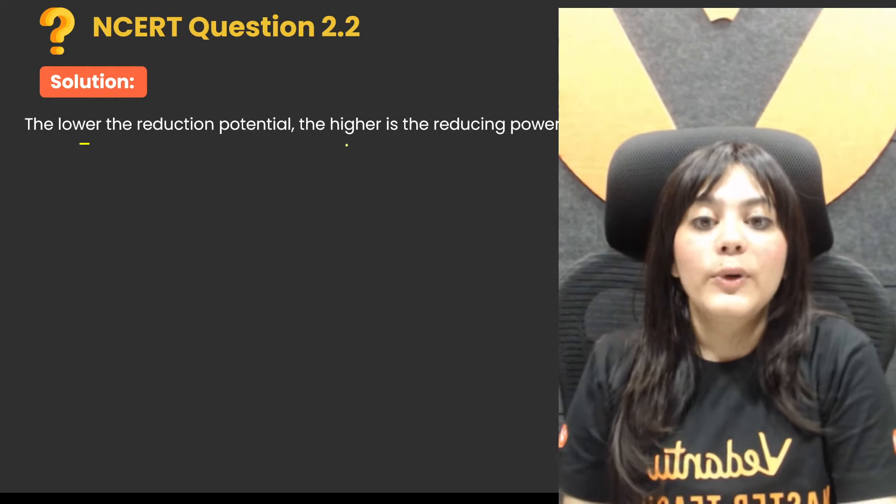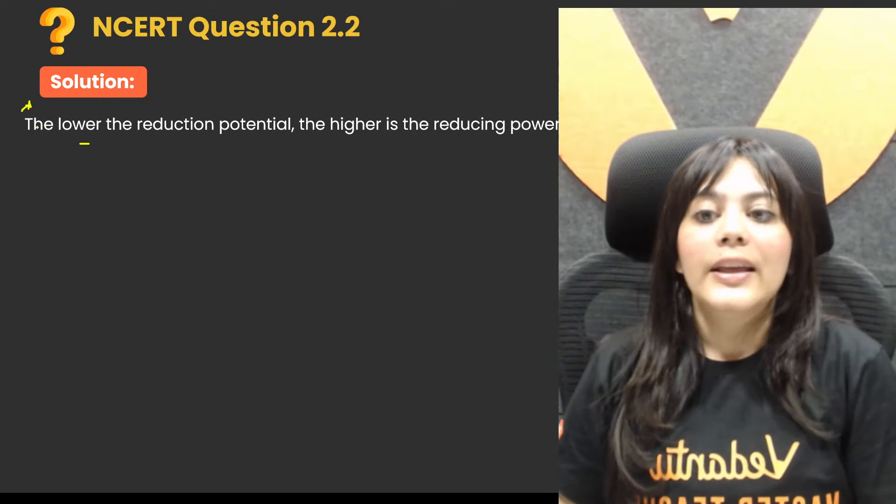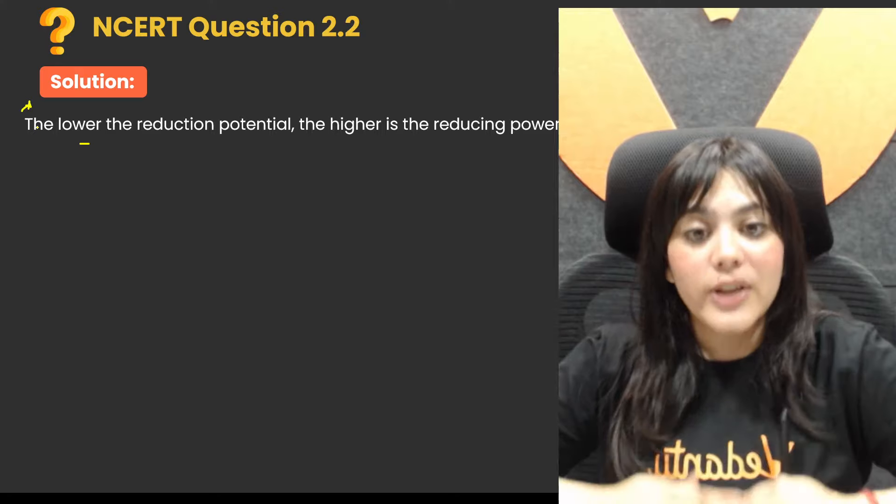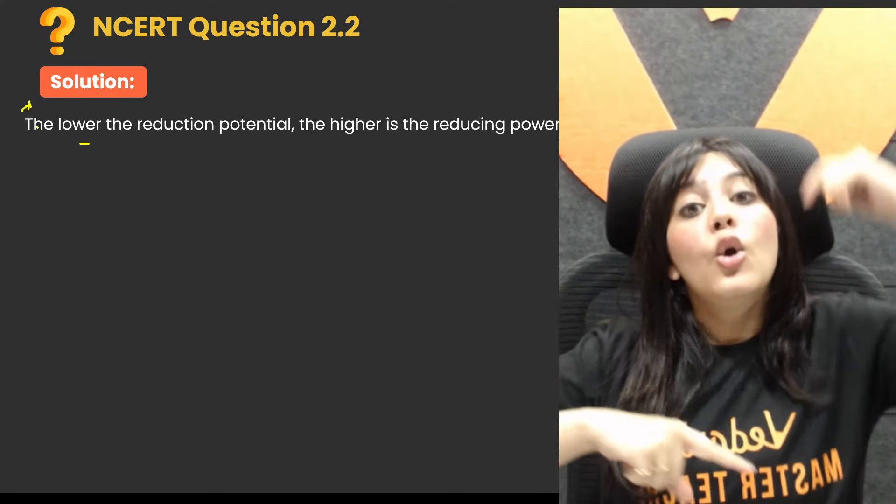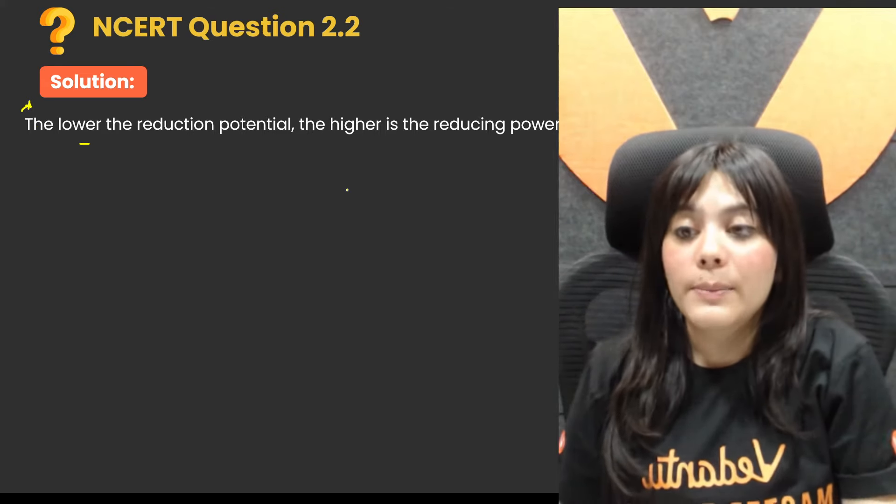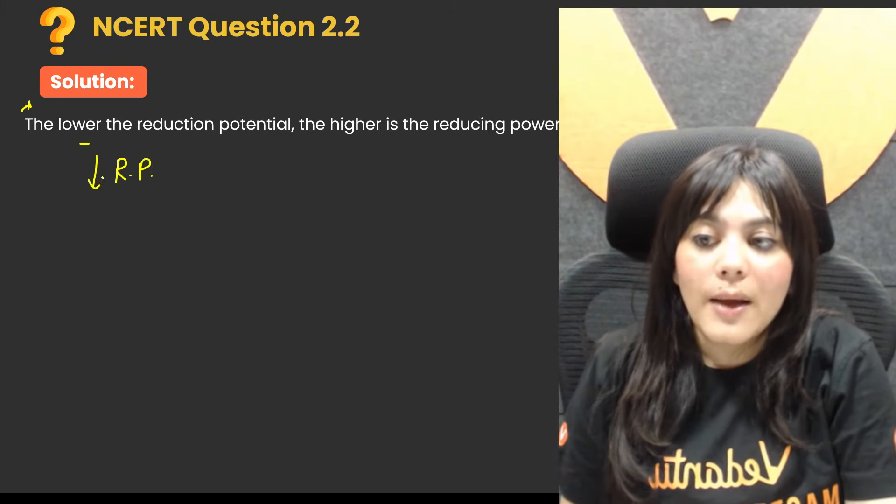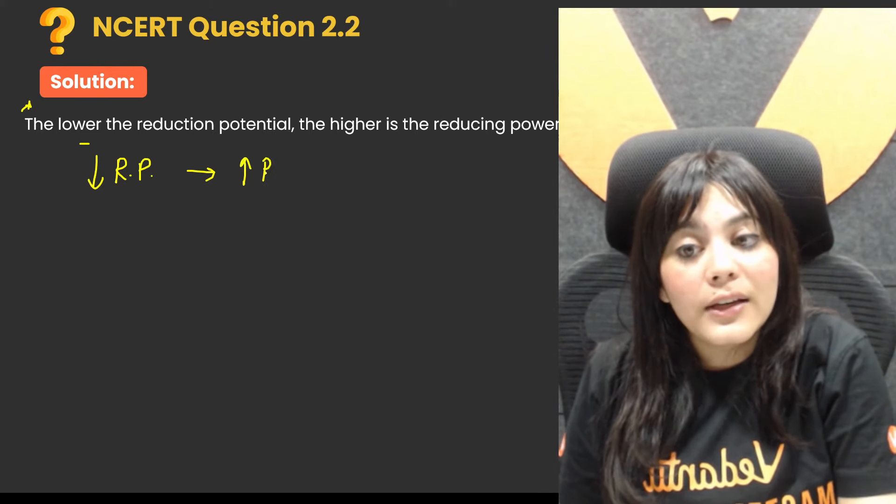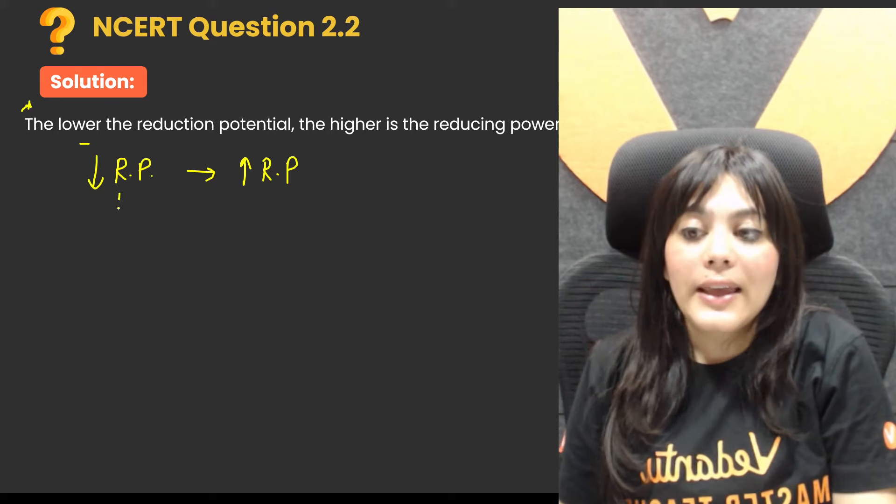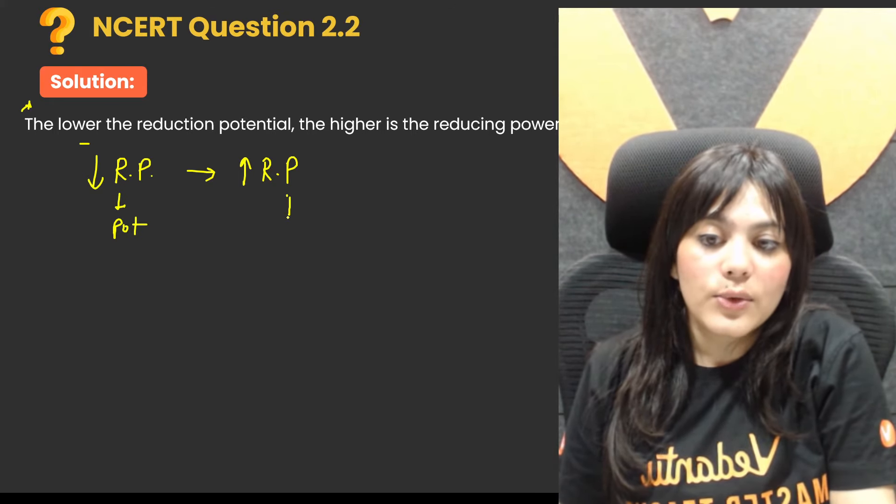Now you understand one thing: the lower the reduction potential, higher is the reducing power. Understand this line, that the more negative the reduction potential, the higher the reducing power. Lower the reduction potential, higher the reducing power.